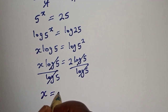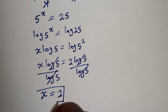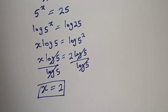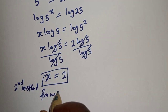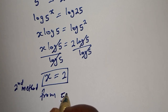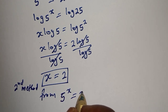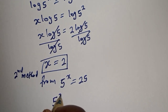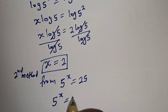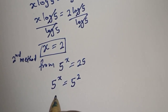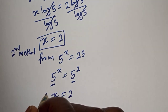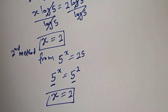So s is equal to 2. This is the final answer. Now let's consider the second method. From 5 raised to power s is equal to 25, we write 25 as 5 squared. They have the same base 5, so we equate the exponents: s is equal to 2. This is the final answer.